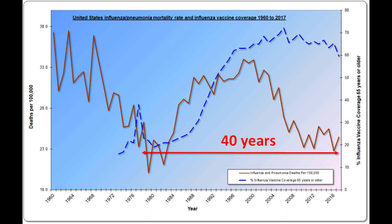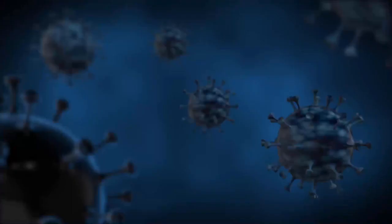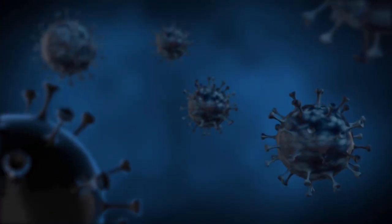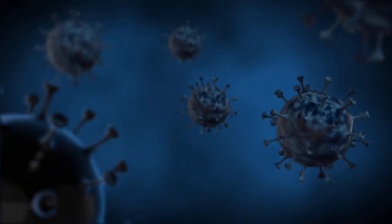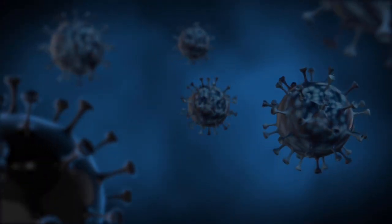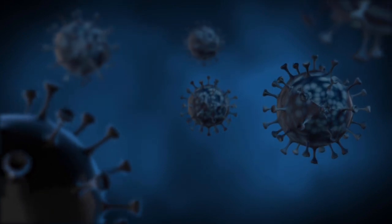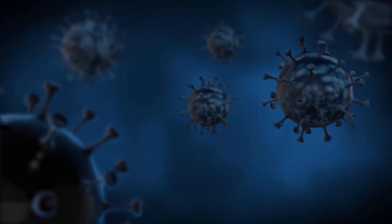Flu and pneumonia deaths fell by 90% before flu vaccination programs. And after 40 years of flu vaccination, the mortality rate is still the same as when flu vaccinations started. All of these diseases have a microbe that is the specific germ culprit 100% blamed for the particular illness. So then why was there a massive decline in deaths before vaccination programs, or even no vaccination program at all?